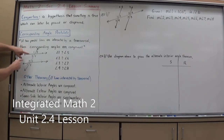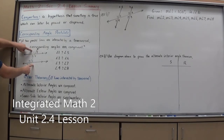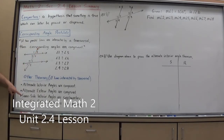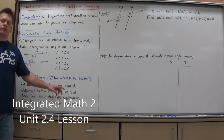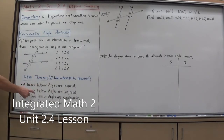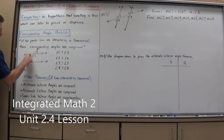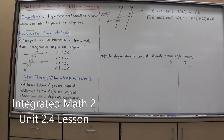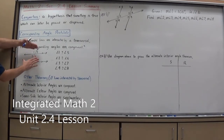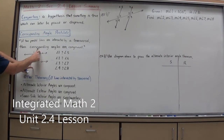Alternate exterior angles are congruent — alternate means opposite sides, exterior means outside the parallel lines — so alternate exterior angles are angles 1 and 8, and angles 2 and 7. Same side interior angles are supplementary, meaning they add up to 180: angles 3 and 5 are supplementary, and angles 4 and 6 are supplementary. Same side exterior angles are supplementary: angles 2 and 8 are supplementary, and angles 1 and 7 are supplementary.